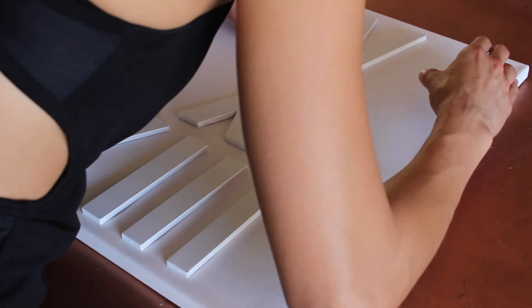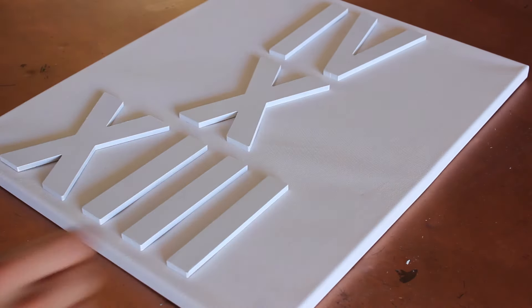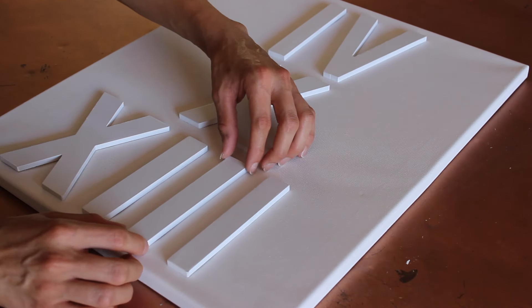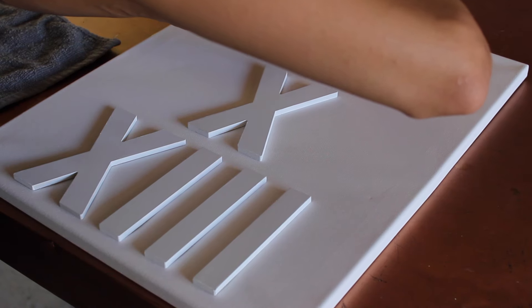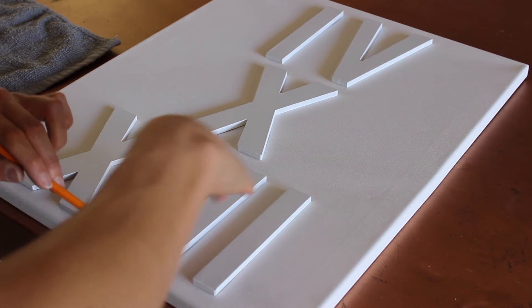So I just went ahead and free handed the spacing for my roman numerals onto my canvas. And again you don't have to do the date that I'm doing obviously or roman numerals. You can do any kind of lettering that you want. Before I moved these to glue them I just marked the bottom of the letters onto the canvas with a straight line so I knew exactly where everything went.